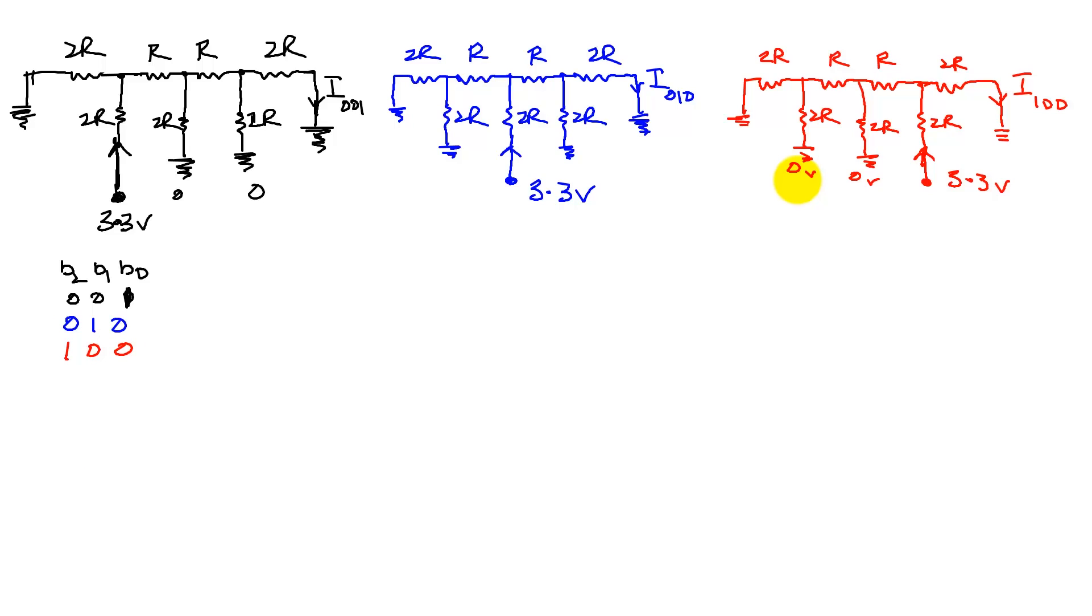The law of superposition says if we look at these three basis elements and prove that these three work, the other five, which are combinations of these three, will also work.